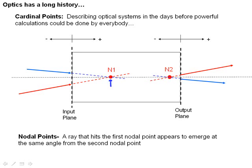In theory, any ray that comes in at an angle and strikes one of these nodal points will leave the system at the same angle from the second nodal point.